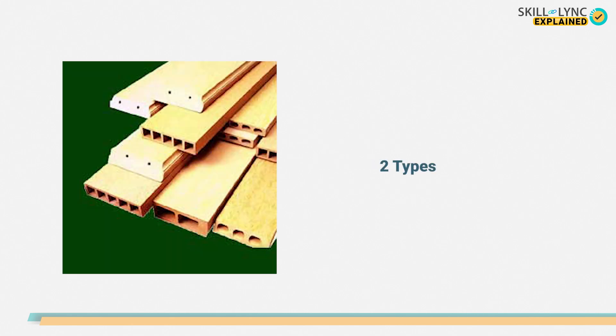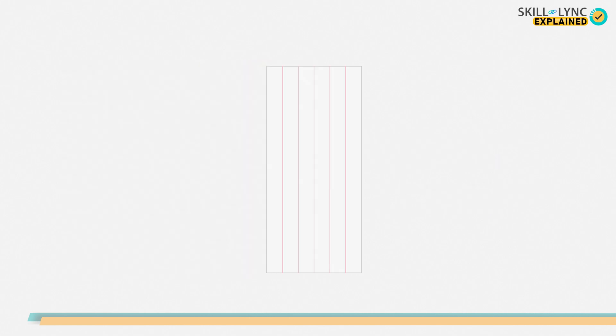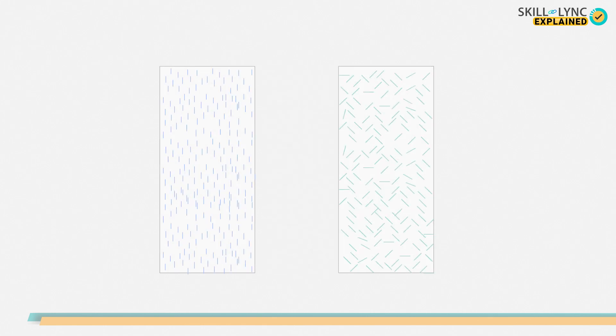Fiber reinforced composites can also be further classified into two types based on the orientation of the fibers: continuously arranged fiber reinforced composites and discontinuously arranged fiber reinforced composites. Of these two, continuously arranged types will have an orderly alignment of fibers. In the second type, the fibers may either be perfectly aligned or randomly arranged.